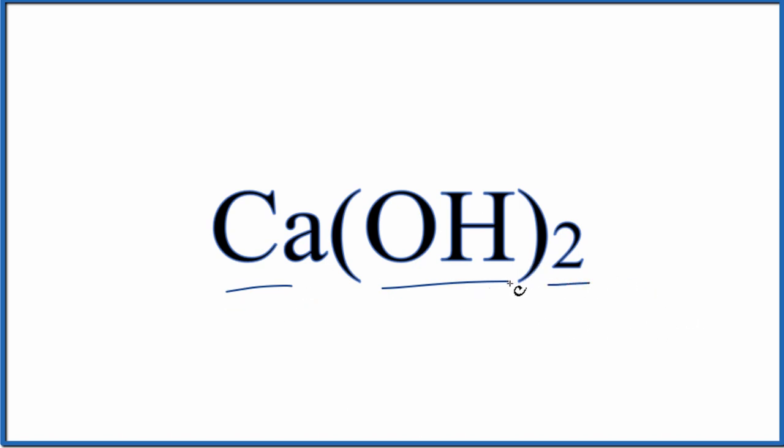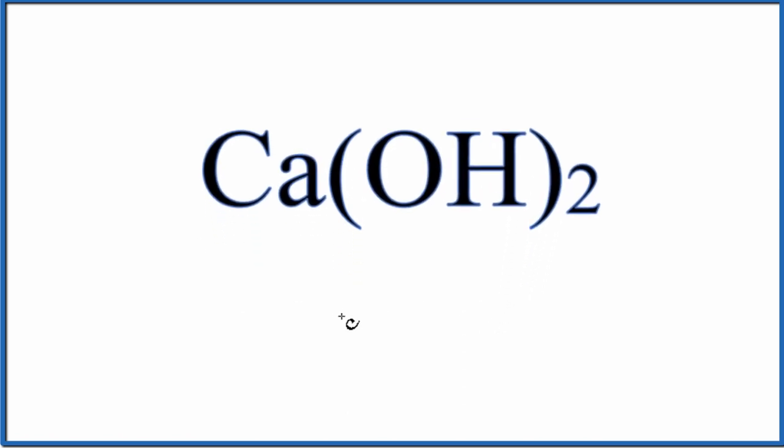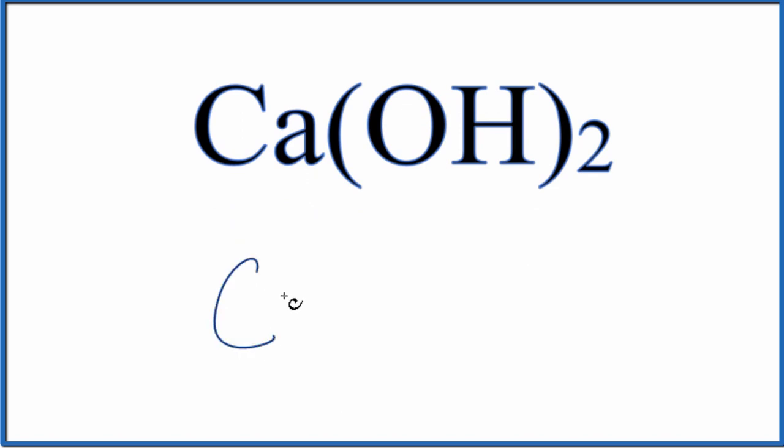First off, this is an ionic compound. We have a metal and then this group of nonmetals. This is a polyatomic ion, an ionic compound. We need to think about charge. Calcium is in group two on the periodic table, so it'll have a two plus ionic charge.